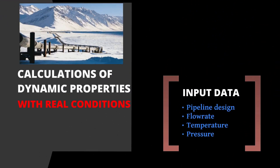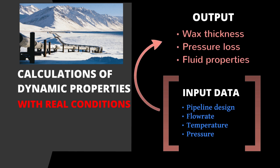Once the model is validated with the experimental results from the wax eval loop, we can predict a real case at a real scale. In other words, the pipeline design, temperature profile along the pipeline, and the flow rate are entered into the model. On top of the wax thickness, many results can be predicted, such as pressure loss, viscosity, density, etc.